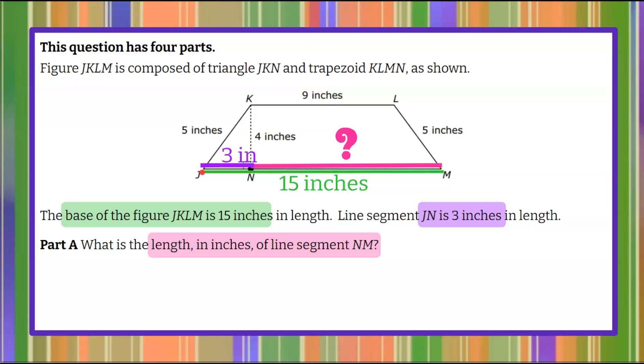So we know this entire length is 15. So 3 plus this unknown amount needs to equal 15. So let's write that down. 3 add the unknown amount equals 15. So what value added to 3 will equal 15? Well we know that that is 12 inches. So we can conclude that line segment NM is 12 inches.